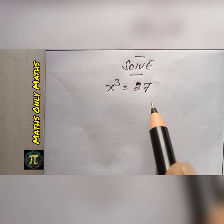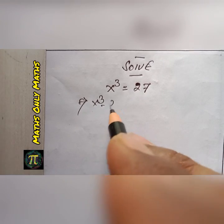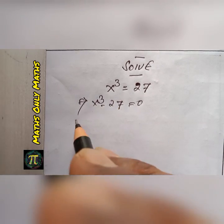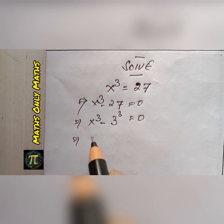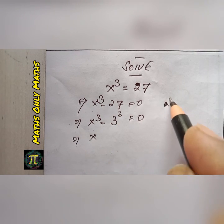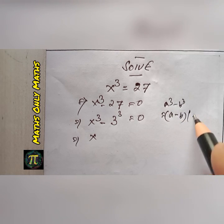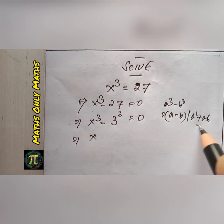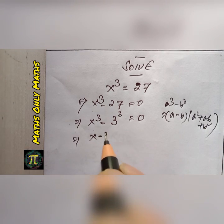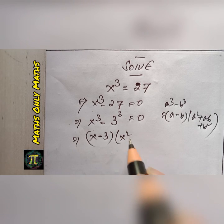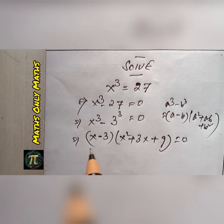Let's solve x³ = 27. I can write x³ - 27 = 0. Since 27 is 3³, this becomes x³ - 3³ = 0. Using the difference of cubes identity, a³ - b³ = (a - b)(a² + ab + b²), I can factor this as (x - 3)(x² + 3x + 9) = 0.